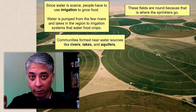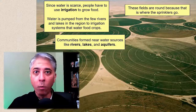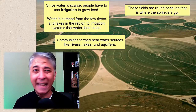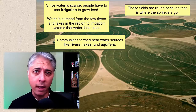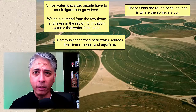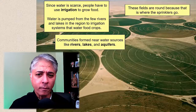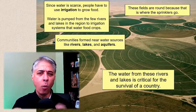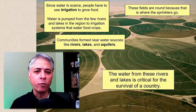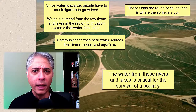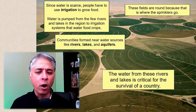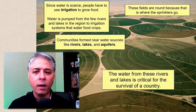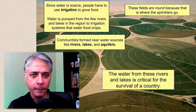Aquifers — that's groundwater, water that you get out of a well or an oasis. Since having a source of fresh water to provide irrigation is very important, communities are going to form in areas where you have these water sources: places like rivers, near lakes, and near aquifers. The water from these rivers, lakes, and aquifers is crucial to the survival of a country.